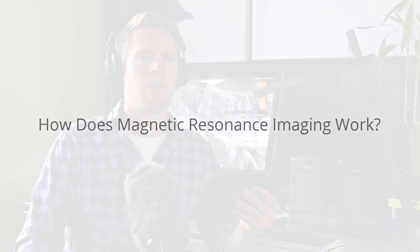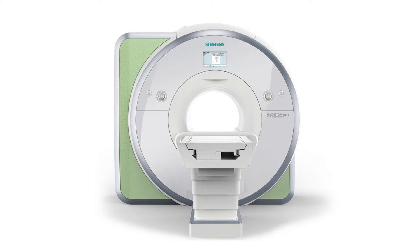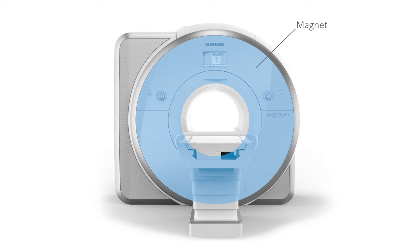MRI relies on nuclear magnetic resonance, a phenomenon in which nuclei in a magnetic field absorb and re-emit electromagnetic radiation. A typical MRI system consists of the following main components. The magnet creates a powerful and uniform magnetic field which points straight through the bore.